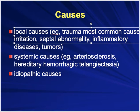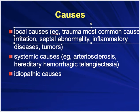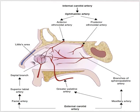Iatrogenic causes include procedures like nasal surgery or sinus surgery. Nasal dryness is a very important cause, especially in winter when heating systems dry the air indoors, commonly causing nosebleeds in children. Septal perforation can occur in cocaine users. Nasal spray use and tumors are also local causes.